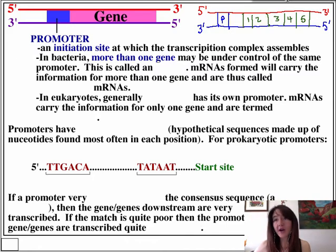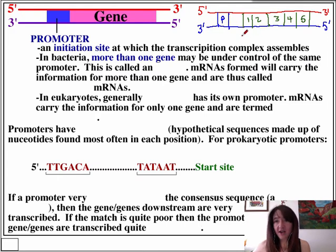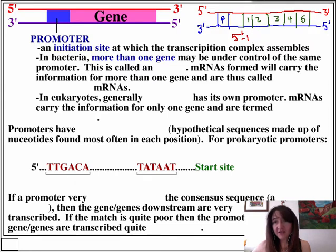So what that means is that when RNA polymerase binds at that promoter and it begins reading the genes and reads the template strand, then it's going to make an RNA that has the information for all five genes on it. After time has passed, we get the synthesis of an RNA that looks like the coding strand, only U's replace T's. On that RNA, we're going to have information for gene one, information for gene two, information for gene three, four, and five — all on the same RNA.